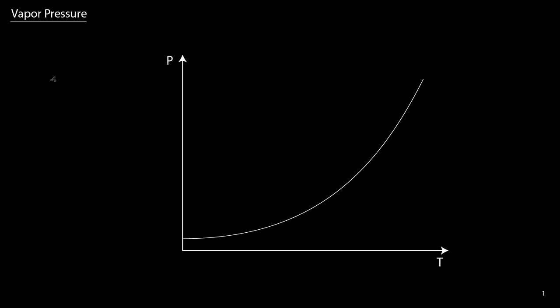Vapor pressure is a material property that characterizes how likely, or what is the propensity for, a molecule to leave the liquid phase and go into the vapor phase.